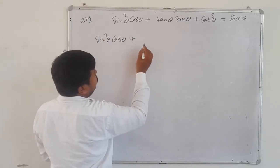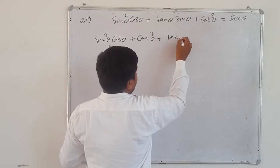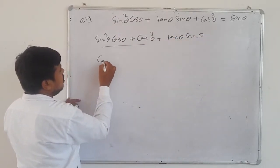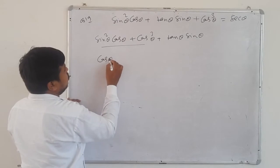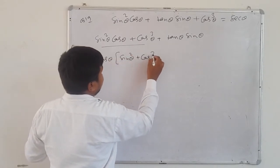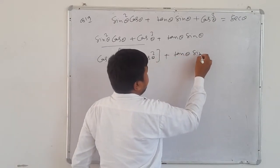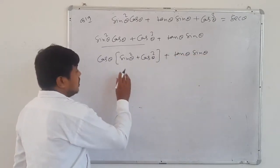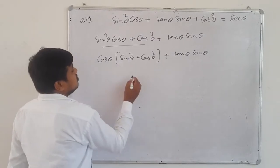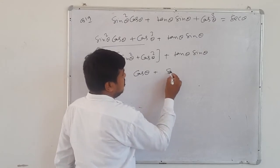Question 19: sin²θ·cos θ + cos²θ — write sin²θ·cos θ and cos²θ together. For tan θ·sin θ — in these two terms, take cos θ as common. Then inside the bracket we get sin²θ + cos²θ. Plus tan θ·sin θ. Using sin²θ + cos²θ = 1, remaining is cos θ.